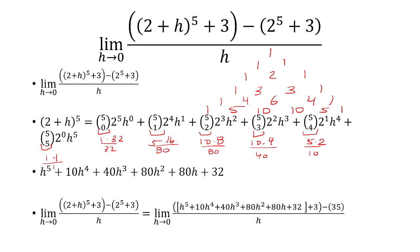So now we just need to put it all together. We have 2 plus h to the 5th plus 3 becomes this whole long expression, and then 2 to the 5th is 32 plus 3 is 35, and that's going to be all over h.